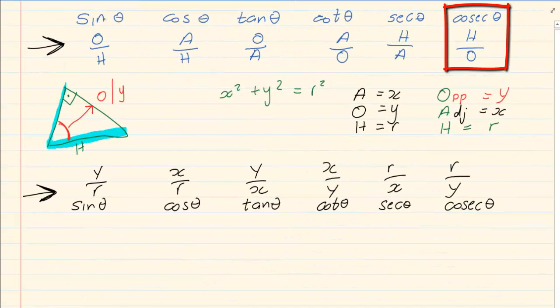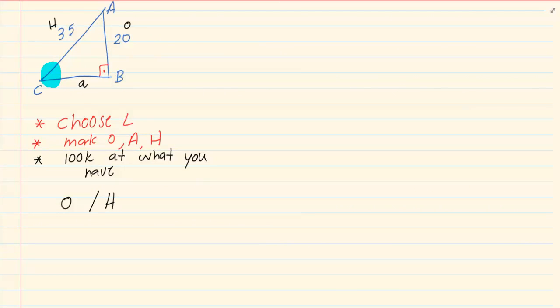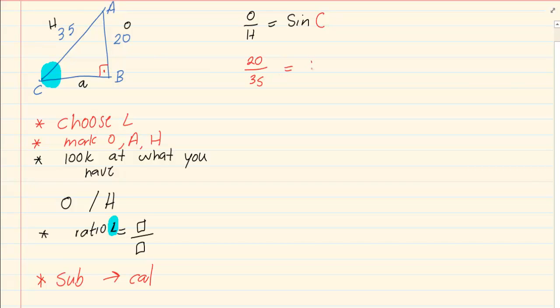So what ratio is created with O and H? O and H you have got sin or you have got cosec. When you have a choice, you always choose sin. So I am going to look at what I have. I know I have O and H. So I am going to say O over H is equal to sin. And which angle did I choose? I chose angle C. Now you substitute.